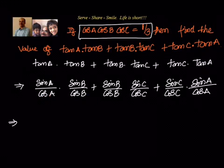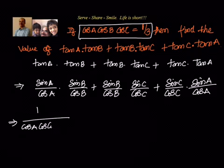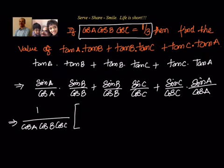You can see that we have cos A cos B, cos B cos C, and cos C cos A in the denominators. So the LCM will be the product of all three, which is nothing but cos A cos B cos C. We write 1 divided by cos A cos B cos C as the common denominator. For the first term, dividing out gives us sin A sin B cos C in the numerator.